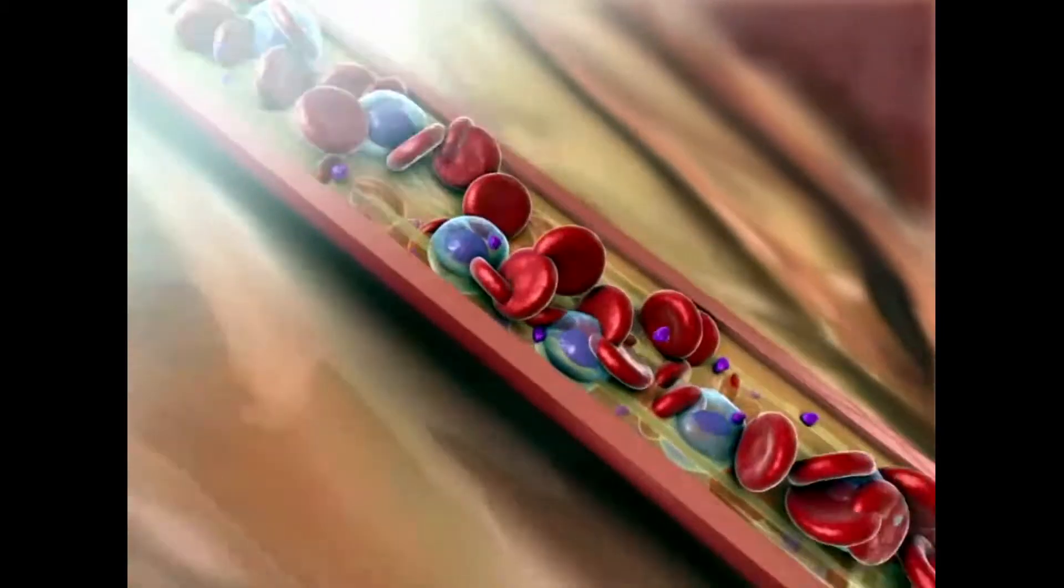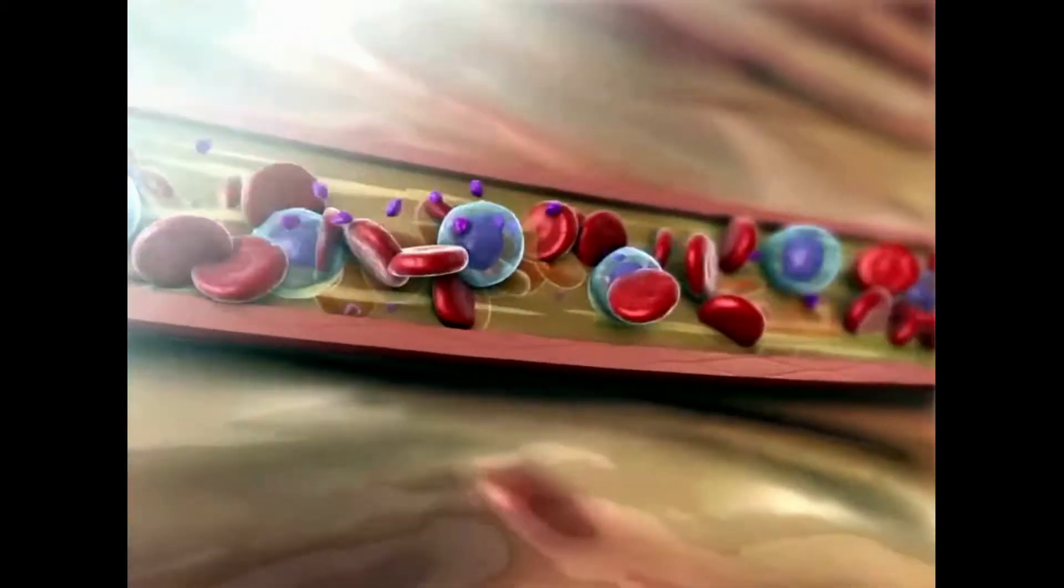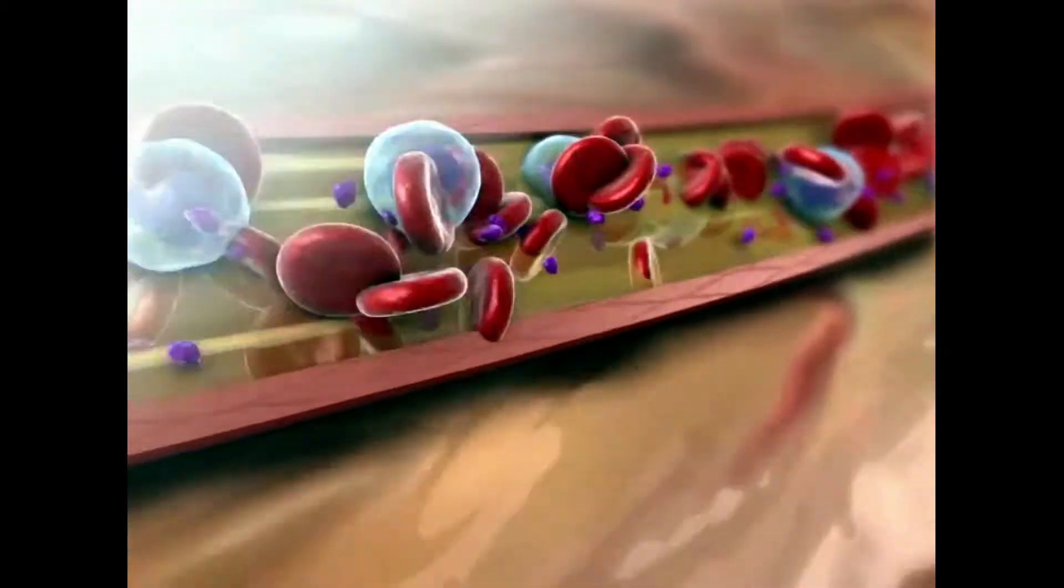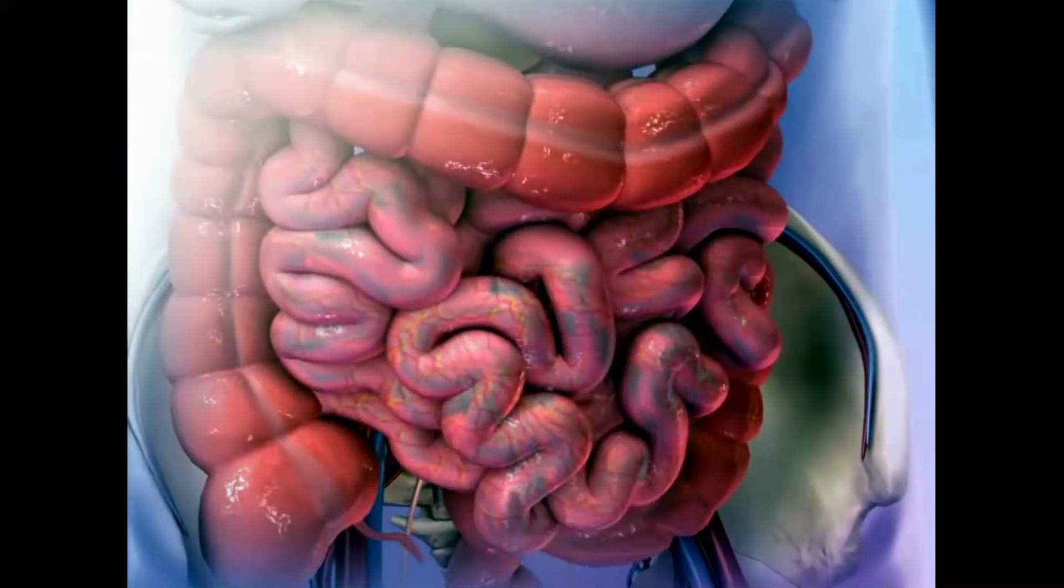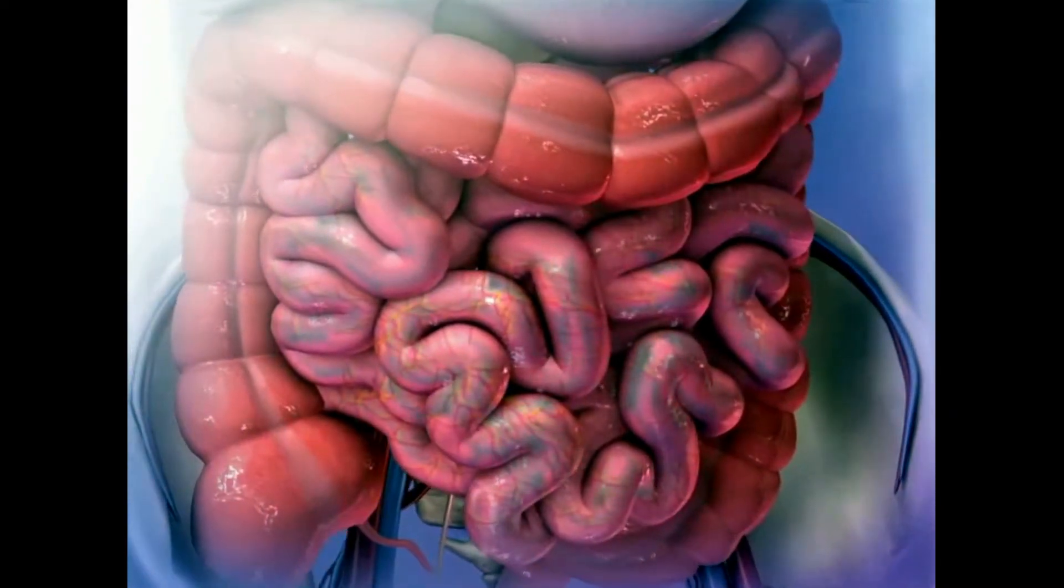The largest component of blood is plasma, a yellowish liquid that is ninety percent water. Plasma carries suspended blood cells and other substances. Nutrients that pass from the digestive system into the body are transported in the blood plasma.